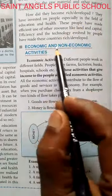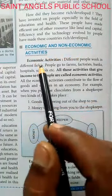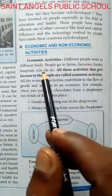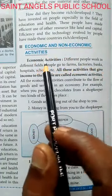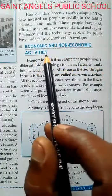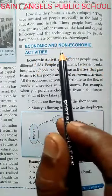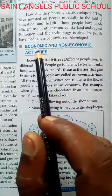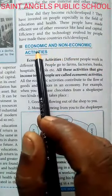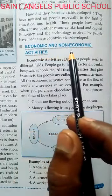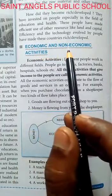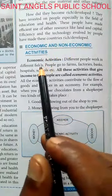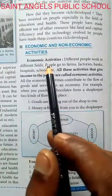Economic and Non-Economic Activities. Economic activities — different people work in different fields. आज हम इस वीडियो में Economic and Non-Economic Activities के बारे में पढ़ेंगे। Economic activities वो सभी काम हैं जिनके बदले लोग पैसा कमाते हैं। Non-Economic Activities ऐसी काम हैं जिनसे लोगों की कोई income नहीं होती।